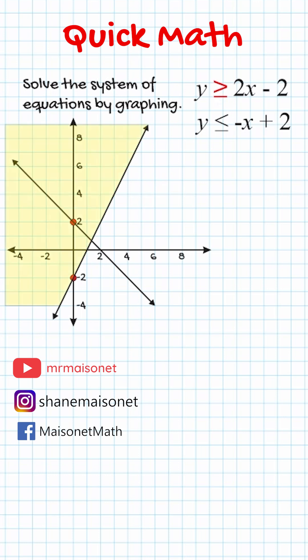And for the second inequality, because we have a less than or equal to symbol, we're going to shade everything below that line.